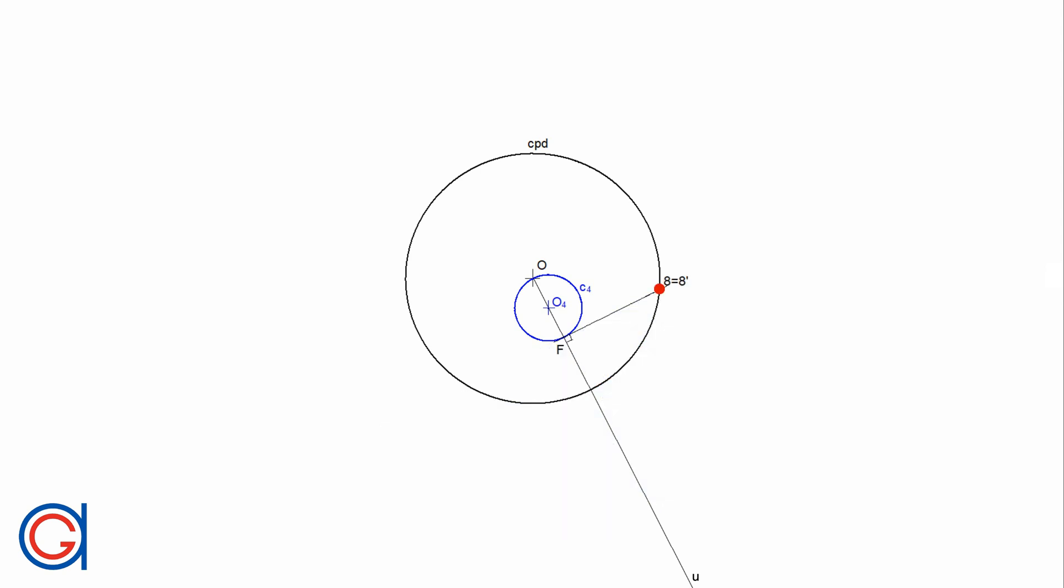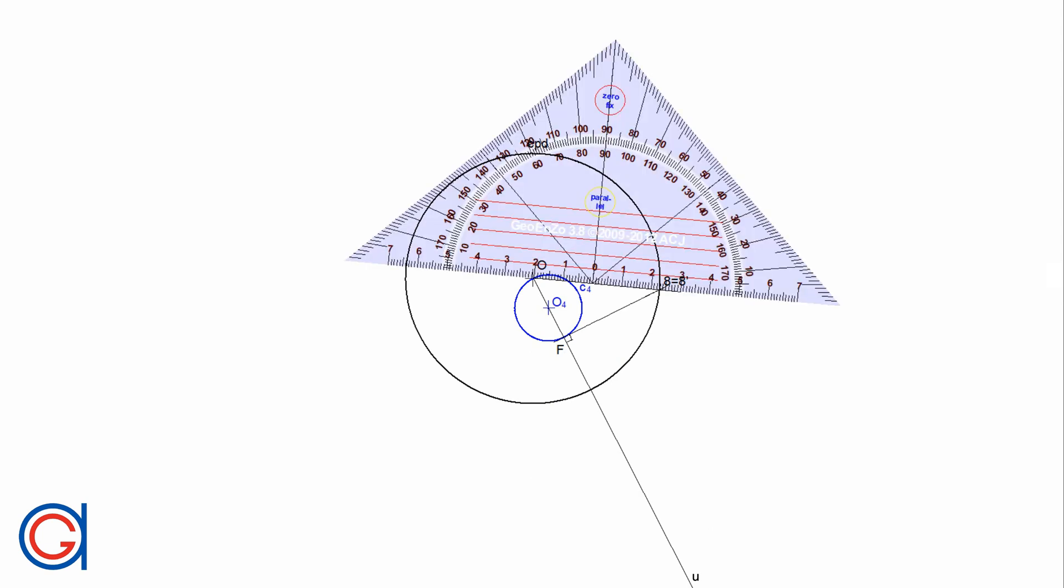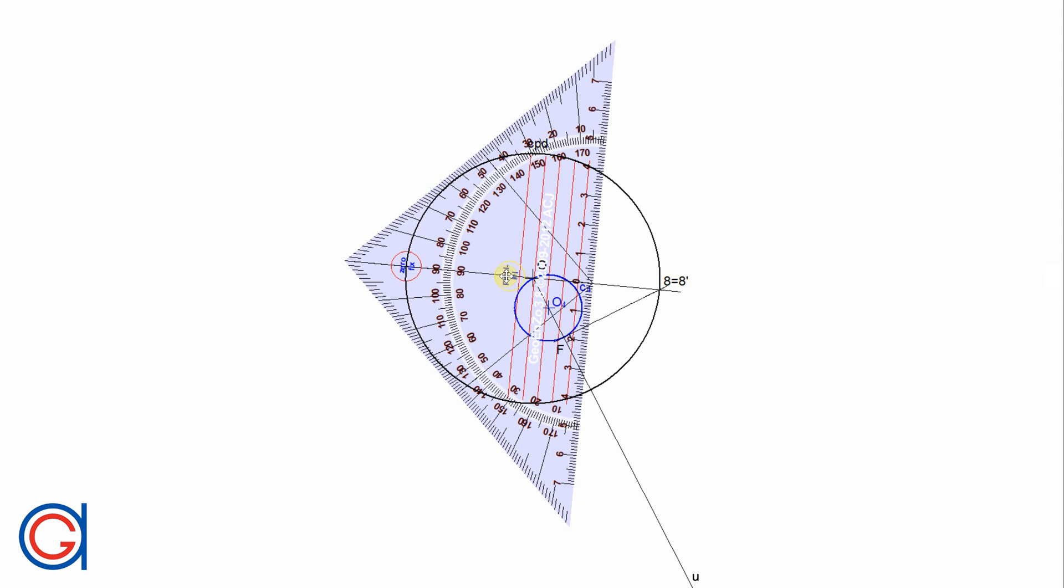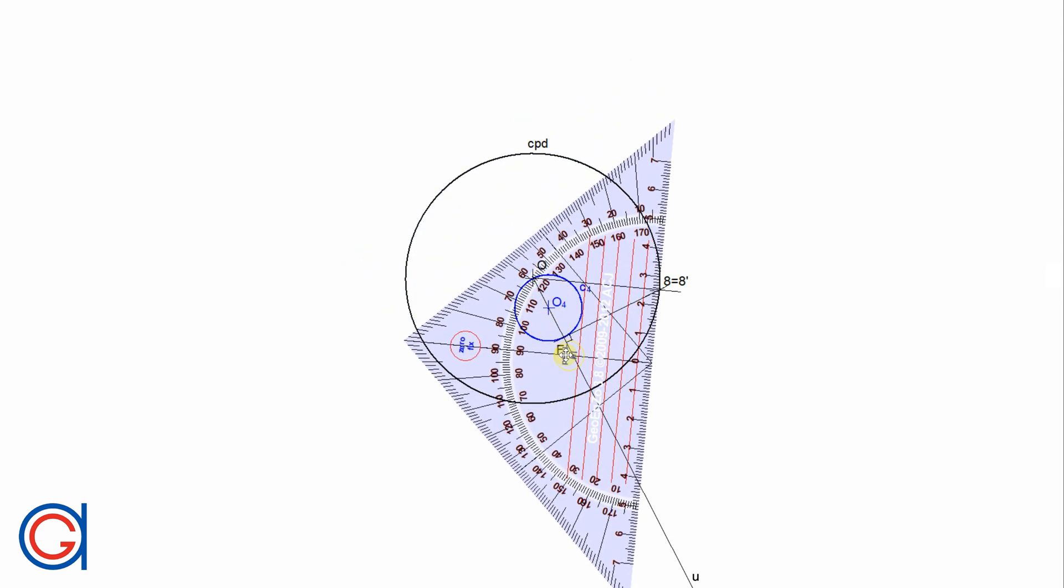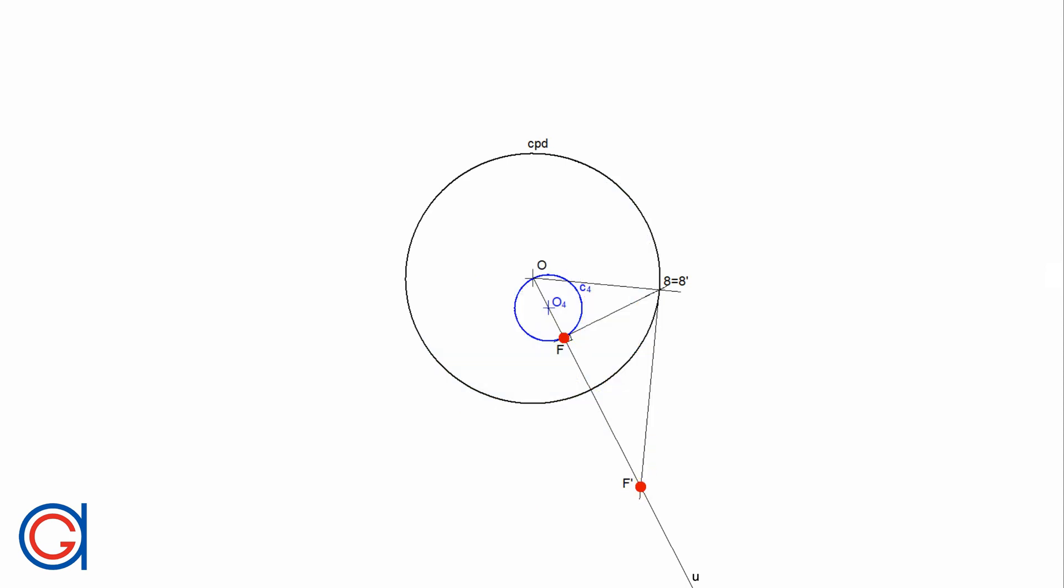And now we join the origin O with the new point 8. From the new point 8, we draw a perpendicular line until it cuts our previously elongated line U at a new point which we will call F prime. This is the inverse of the point F.